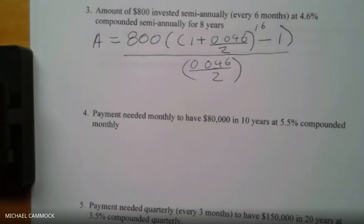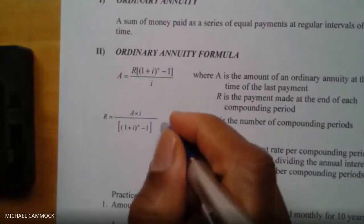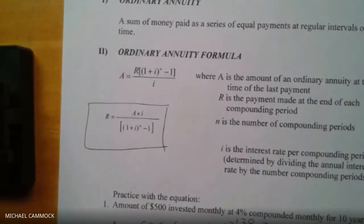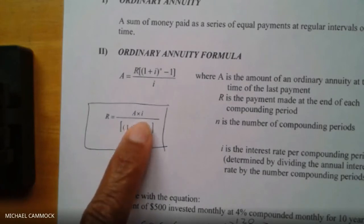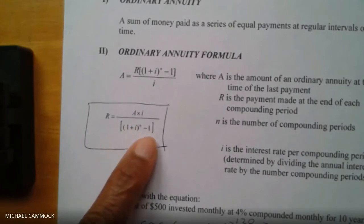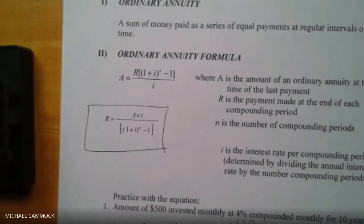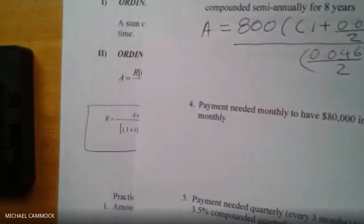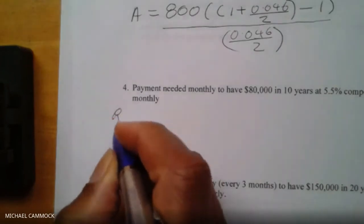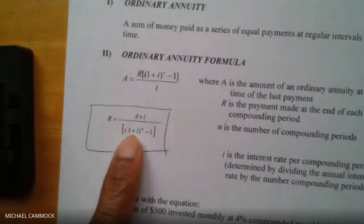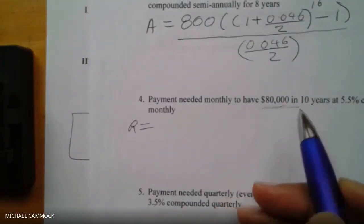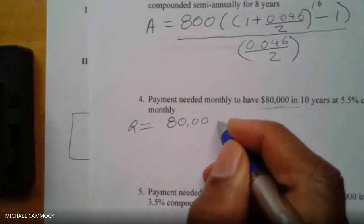Using the second formula: R equals A times (i over (1+i)^n minus 1). The A is $80,000. Interest is 5.5% compounded monthly, so 0.055 divided by 12. On the bottom: one plus 0.055 divided by 12, raised to the power of 120 (10 years monthly), minus one.